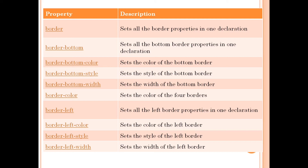Here is a reference of border properties. Border-bottom-color sets the color of the bottom border. Border-bottom-style sets the style of the bottom border. Border-bottom-width sets the width of the bottom border. Border-color sets the color of all four borders. Take a screenshot and keep it on your mobile — it will be very helpful when you create your web pages.